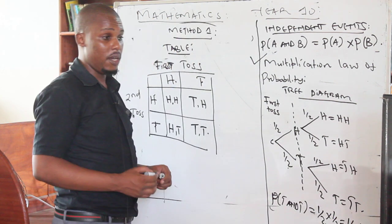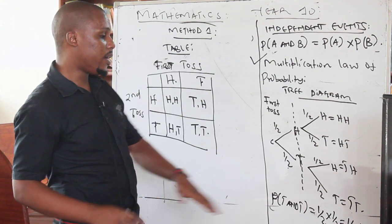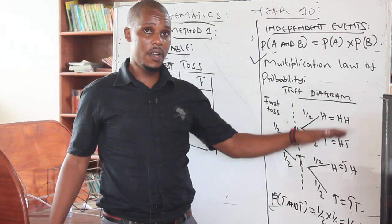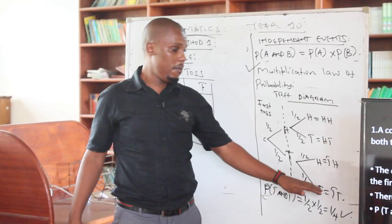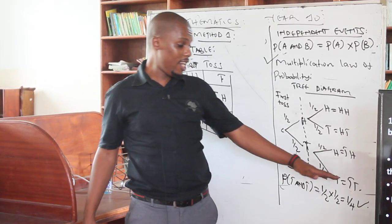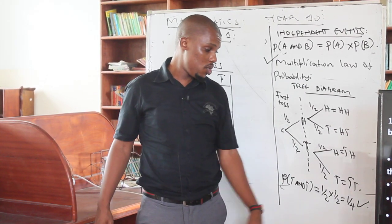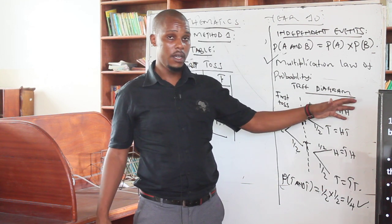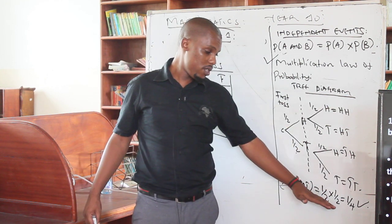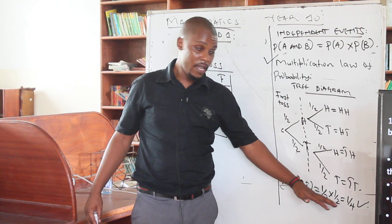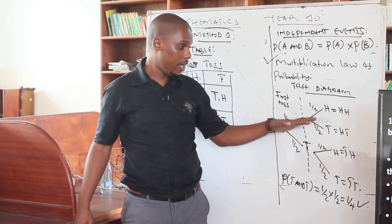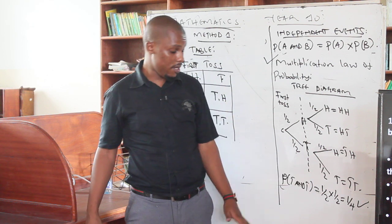That is the concept I'm trying to talk about. But if not that, we can also count it. You have a list of the possible number of outcomes — there are four of them. Out of the four, which one is favorable? Tail and tail — so it is one out of four. I want to emphasize the whole concept of probability, which is why I'm using a tree diagram in this case.